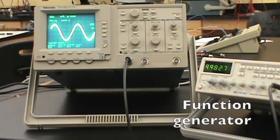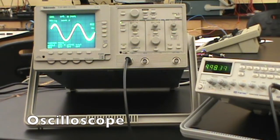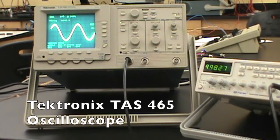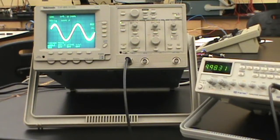In this video, we use the function generator as our voltage supply to show how to make quantitative measurements using an oscilloscope. We are using the Tektronix TAS465 analog oscilloscope. All oscilloscopes are fairly similar, so the basic functions we are talking about work in the same way.